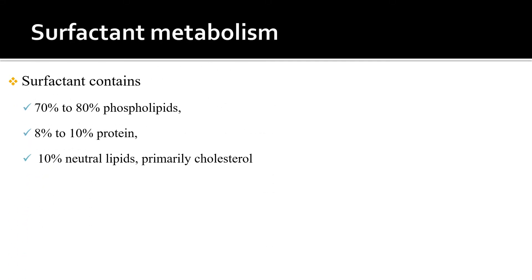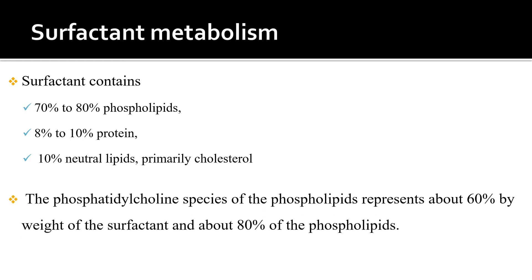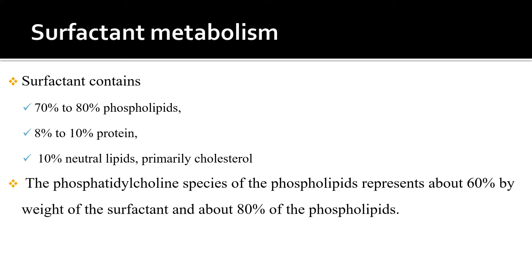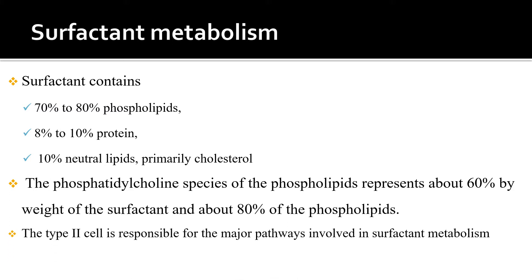When we look at surfactant metabolism, surfactant contains 70–80% phospholipid, 8–10% protein, and 10% neutral lipids, primarily cholesterol. The phosphatidylcholine species of the phospholipids represents about 60% by weight of the surfactant and about 80% of the phospholipid. The type 2 cell is responsible for the major pathway involved in surfactant metabolism.